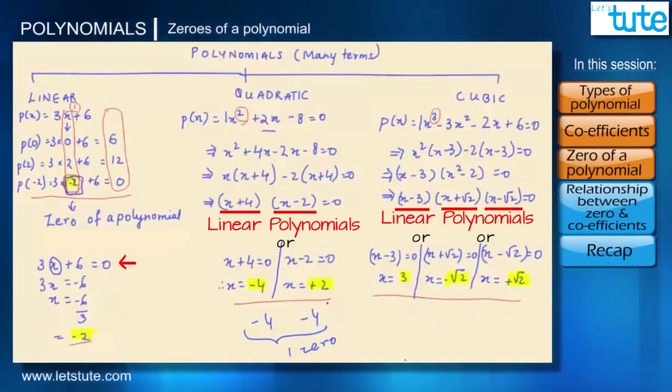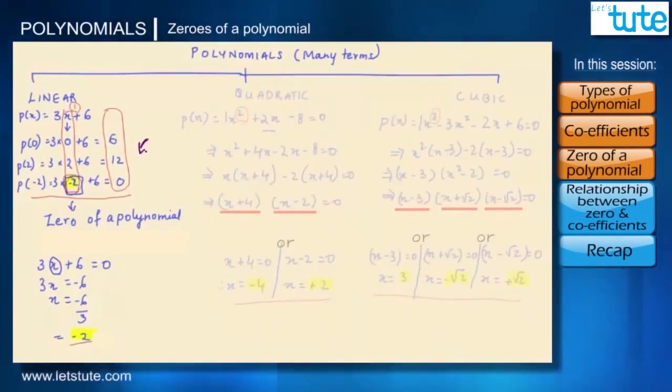Similarly, even for cubic, suppose if the zeros that we got were 3, 3 and root 2, just assuming. Then these two would be considered only as one zero and this would be one zero. So then we can have only two zeros for a cubic polynomial. So there is a possibility that we could have lesser than three zeros for a cubic polynomial but not more than three zeros.